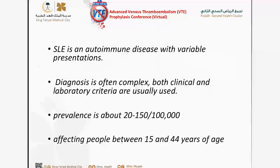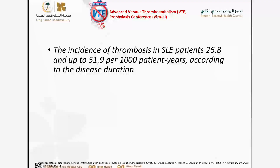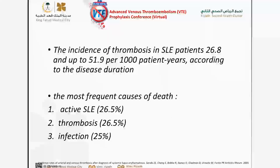SLE is not a rare disease. It's actually the second most common rheumatological disorder in our practice, affecting people between 15 to 44 years — the majority of our patients are young individuals. This is very important when we talk about thrombosis, which affects the quality of their life. The incidence of thrombosis in lupus patients is 26.8, and it can go up to 52% per thousand patients per year, according to disease duration and activity.